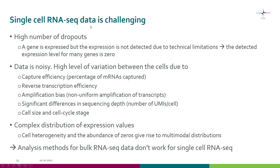So why is single-cell RNA-seq data challenging? First, there is a high number of dropouts — a dropout means a gene which is expressed but we fail to detect that expression. As a consequence we end up with lots of zeros in our UMI count table, and we say the data is zero-inflated. The data is also noisy because there is a lot of technical variation: the percentage of mRNAs captured varies, reverse transcription efficiency varies, and there can be amplification biases.